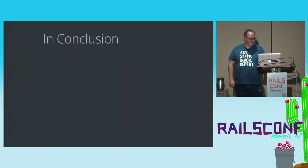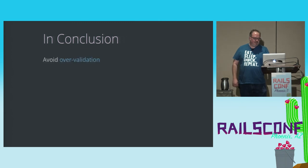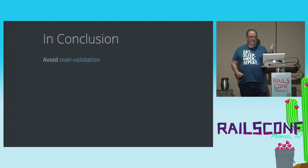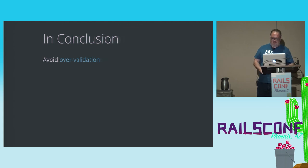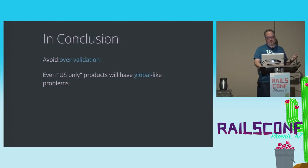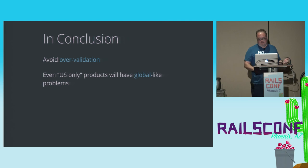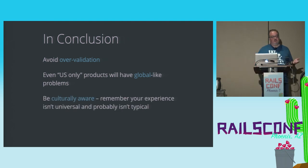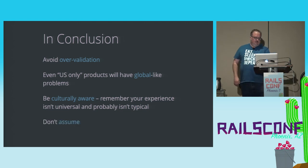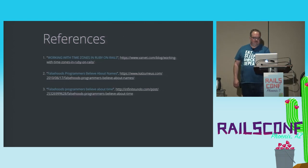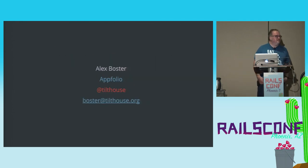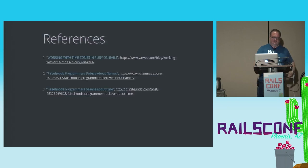In conclusion, the main takeaway is: don't over-validate. People have this need to check the values of these things when you can't. Even US-only products will have global-like problems. Be culturally aware — remember that your experience isn't universal and probably isn't typical. Just don't make assumptions. There are some references in the slides for the blog posts mentioned. Thank you.